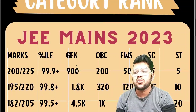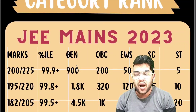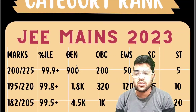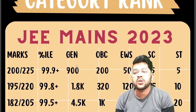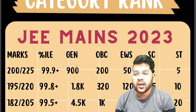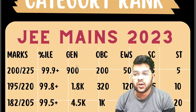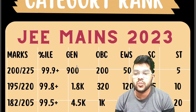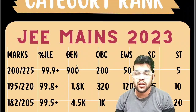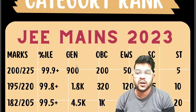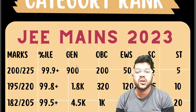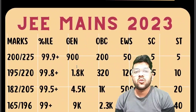For 99.5+ percentile, your marks would be 182 for the first attempt and 205 for the second attempt. The corresponding ranks are: General 4,500, OBC 1,000, EWS 500, SC under 50, ST under 20.